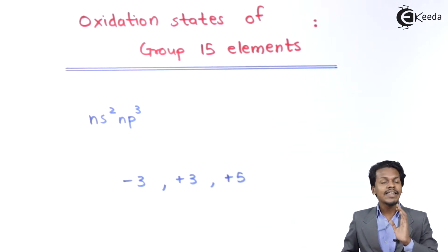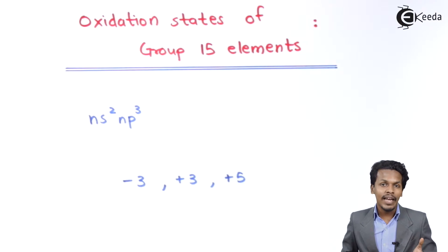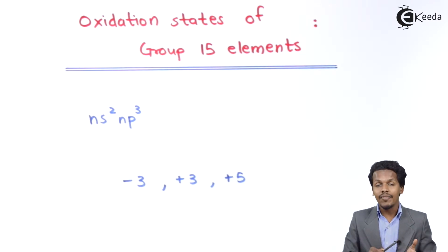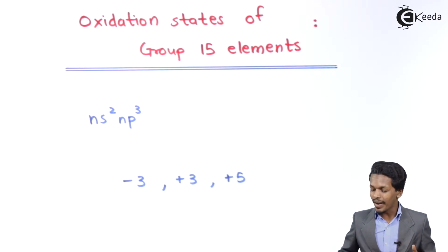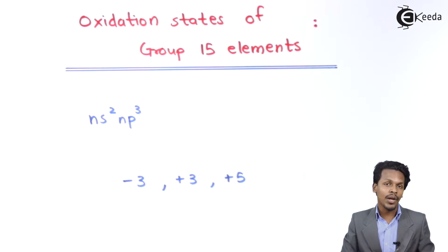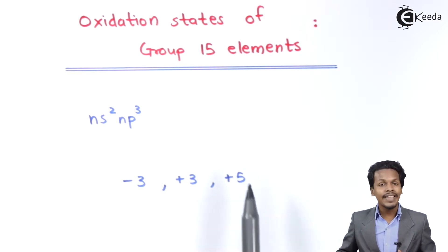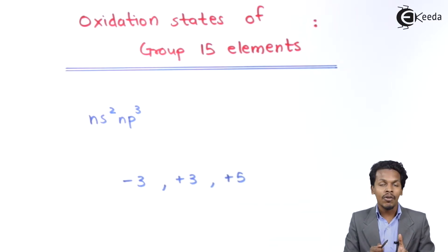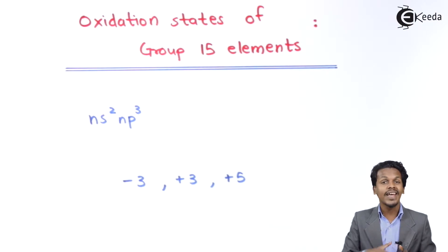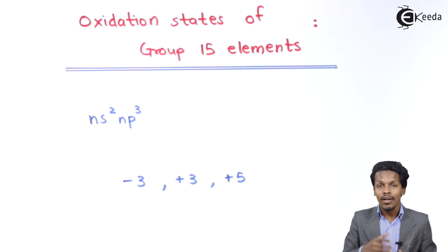So the Group 15 element can have an oxidation state ranging from minus 3 to plus 5. That was the common oxidation state of Group 15 elements. Now let us talk about which specific elements exhibit which oxidation state.